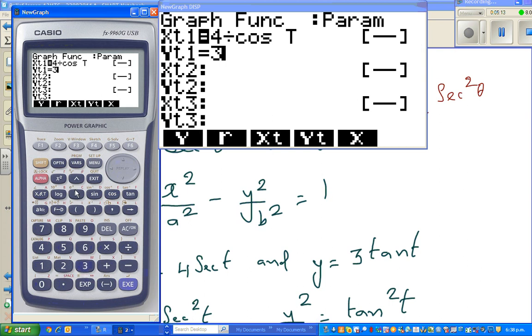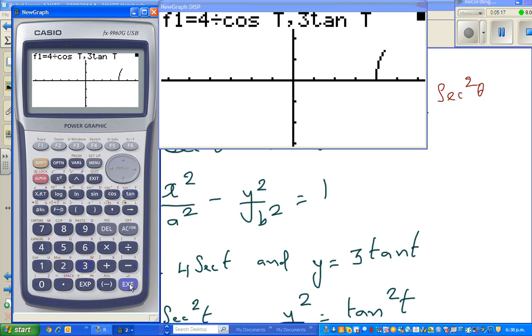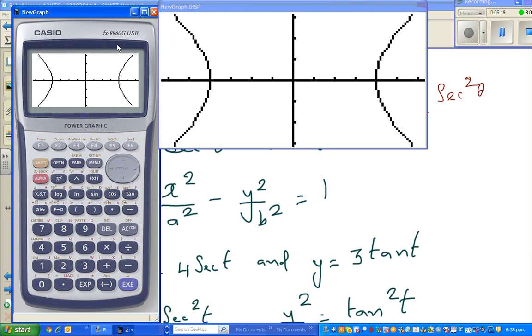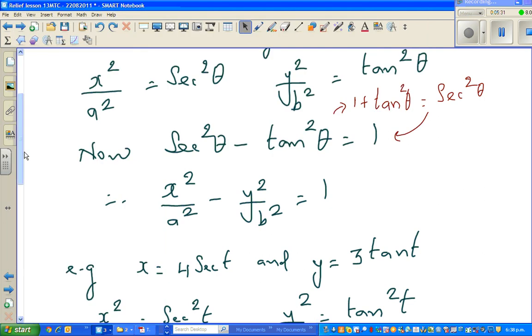And y is equal to 3 tan t and it'll just draw the... can you see, these are the two branches of the hyperbola. So the vertices are negative 4 and plus 4 and the asymptotes go like this, you know that.